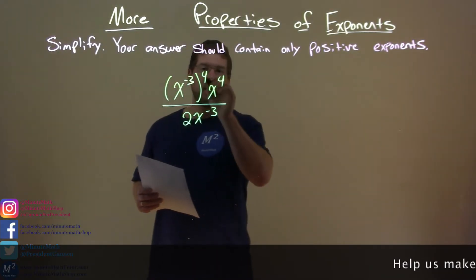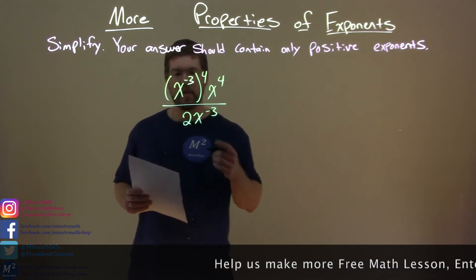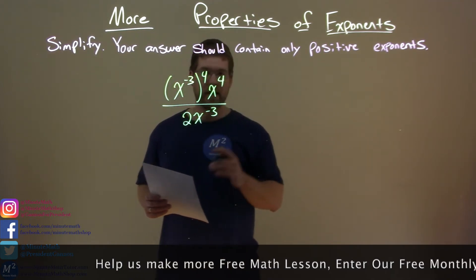X to the negative third power, all to the fourth power, times x to the fourth power, all over 2x to the negative third power.